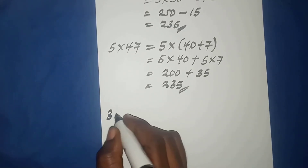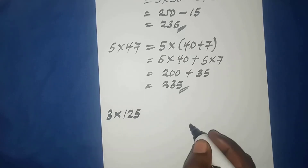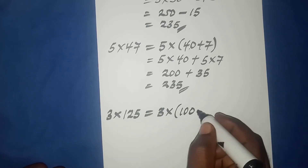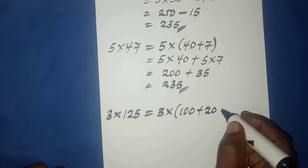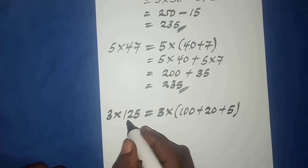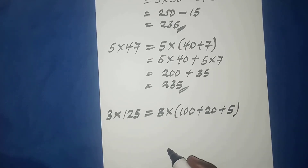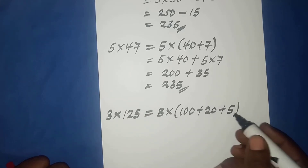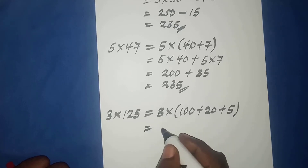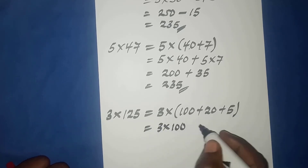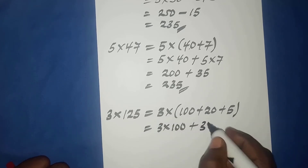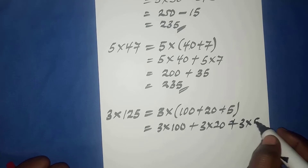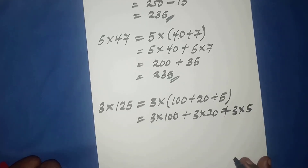Another example: three times one hundred twenty-five. We can rewrite this as three times one hundred plus twenty plus five. Three times one hundred twenty-five may be difficult to evaluate without tables or a calculator, but expanding one hundred twenty-five this way makes it much easier.